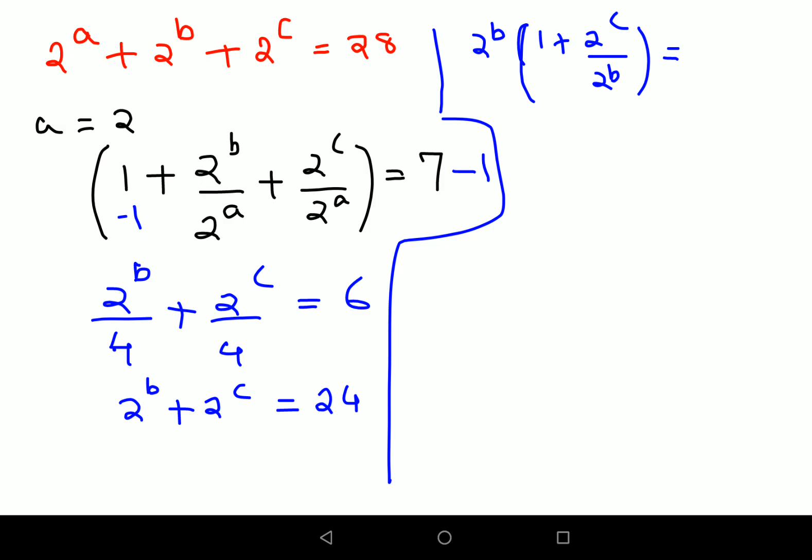Now this 24, let's write it in highest multiple of 2. So this can be written as 8 into 3, or instead of 8 I can write this as nothing but 2 raised to 3 into 3.